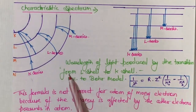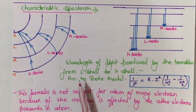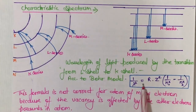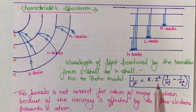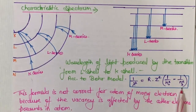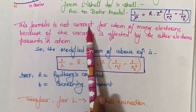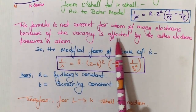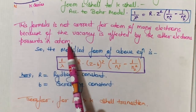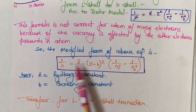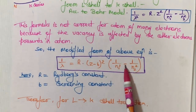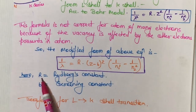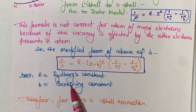For the wavelength of light produced by transition from L shell to K shell, according to Bohr's model: 1/λ = R·Z²·(1/n₁² − 1/n₂²), where R is the Rydberg constant, Z is the atomic number, and n₁, n₂ are orbit numbers. This formula is not accurate for multi-electron atoms because the vacancy is affected by other electrons. The modified form is: 1/λ = R·(Z − b)²·(1/n₁² − 1/n₂²), where b is the screening constant.